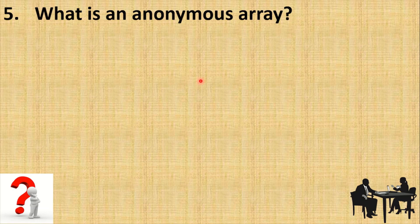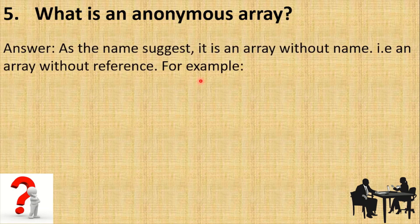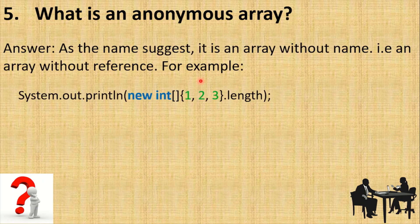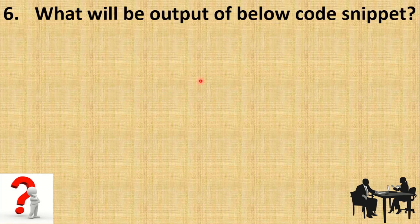Next is: what is an anonymous array? As the name suggests, this is an array without a name — that is, an array without a reference variable. For example, if I want to print the length of an array having elements 1, 2, 3, I can declare and initialize the array inline in a single statement without assigning it to any reference variable. That is termed an anonymous array. This will output 3.